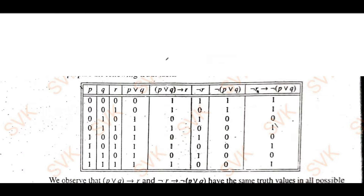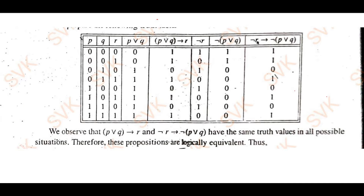This is the question paper. Moving on to the solution part — going with the first question, they were given the problem to prove that the given compound proposition is a tautology. This is what I have shown here. By observing the last column, we have the same truth values, so we can say the conclusion is a tautology.